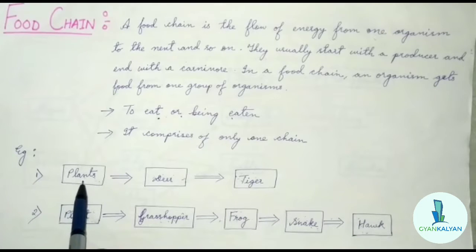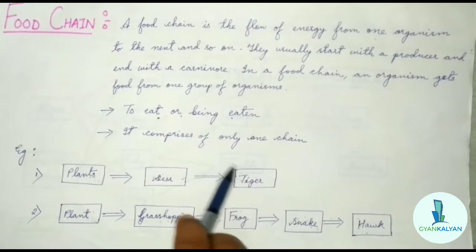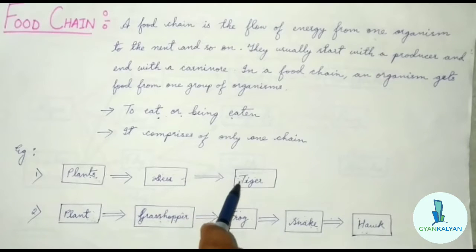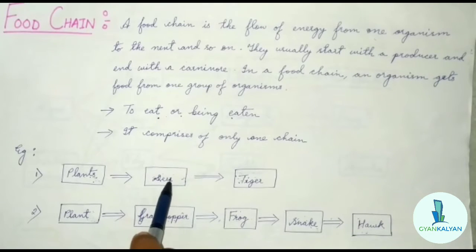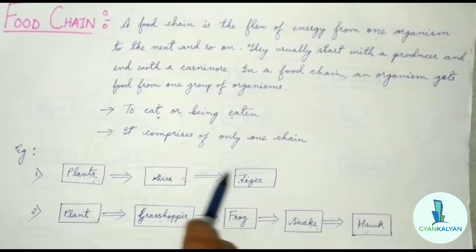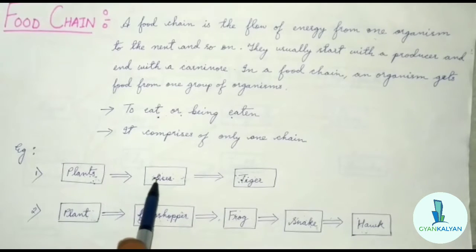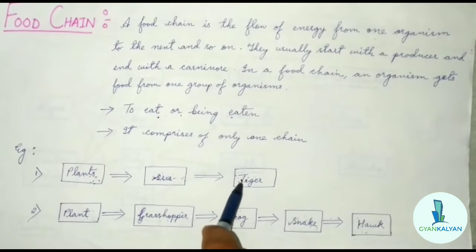For example, plants are eaten by deer, and deer is eaten by tiger. Here, the flow of energy is from plants to deer, and from deer to tiger. So energy is transferred from plants to deer because deer eats the plants, and from deer to tiger because tiger eats the deer. There is a continuous flow of energy from plants to deer and from deer to tiger in a single chain.